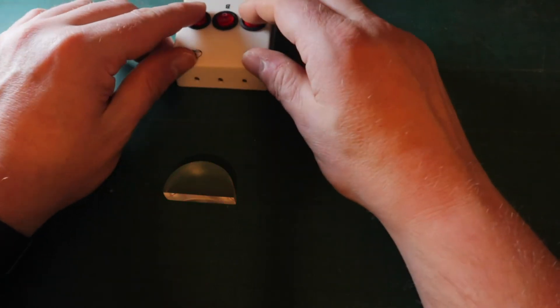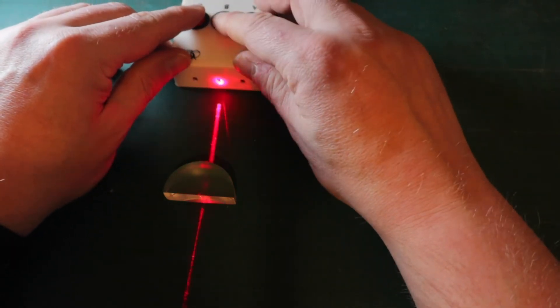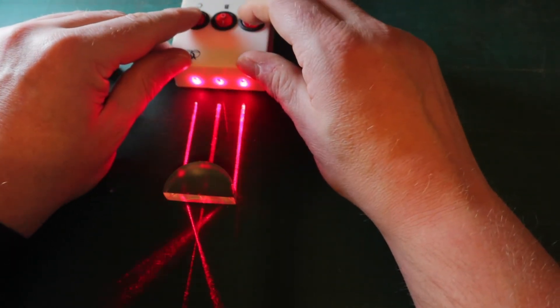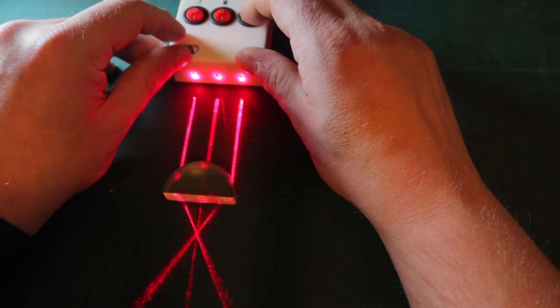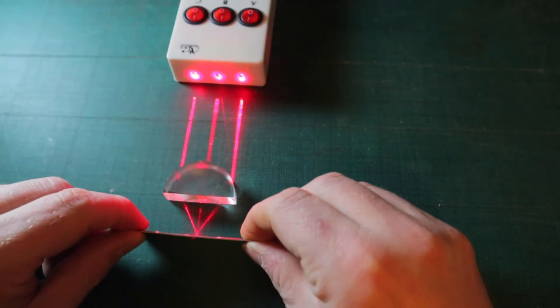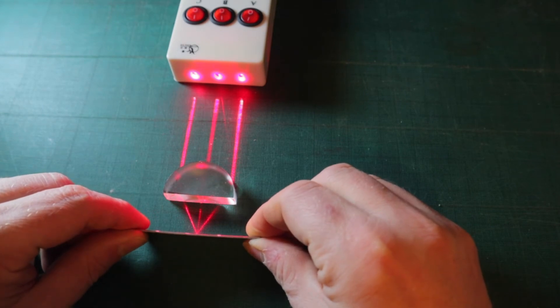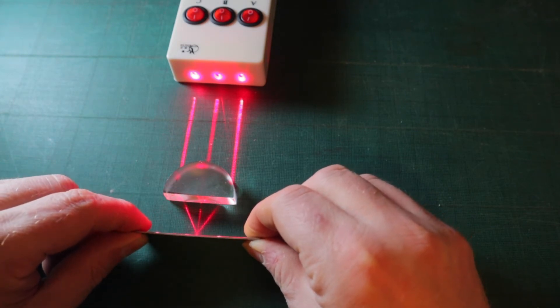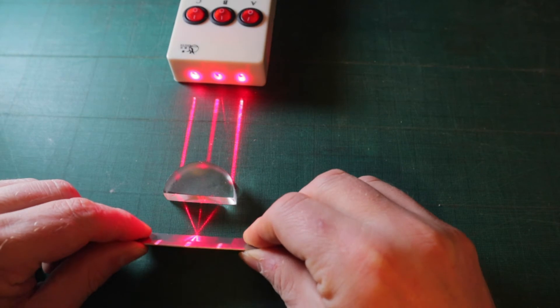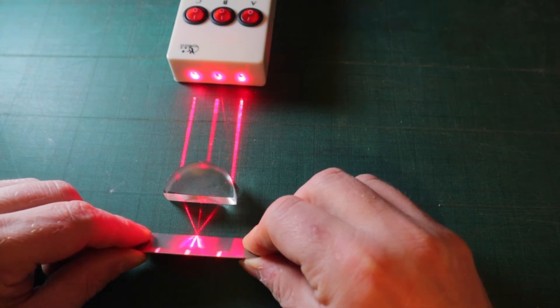I can further illustrate this if we fire all three lasers into the lens at the same time. We get a very clear focal point where all the beams meet, and if this were a real laser, this would be where the cutting work and the engraving work happens.